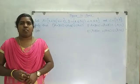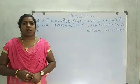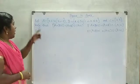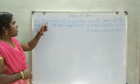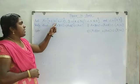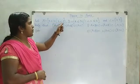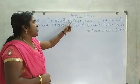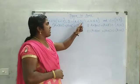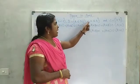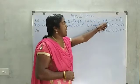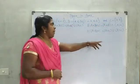Hi friends, welcome to our MK Math Solving. Today we can solve one problem. Let A be the set of all X belonging to W such that X is less than 2. B is the set of all X belonging to N such that 1 less than X less than or equal to 4. And C is equal to {3, 5}.